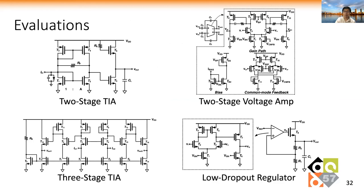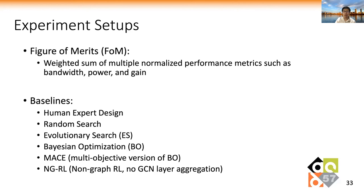We evaluated the performance of GCNRL on four circuits: a two-stage transimpedance amplifier, a two-stage voltage amplifier, a three-stage transimpedance amplifier, and a low dropout regulator. We used the weighted sum of several normalized performance metrics, such as bandwidth, power, and gain as a figure of merit, and compared our performance with multiple baseline algorithms, including human expert design, random search, evolutionary search, Bayesian optimization, MACE (multi-objective BO), and NGRO, which is reinforcement learning without the GCN layer.